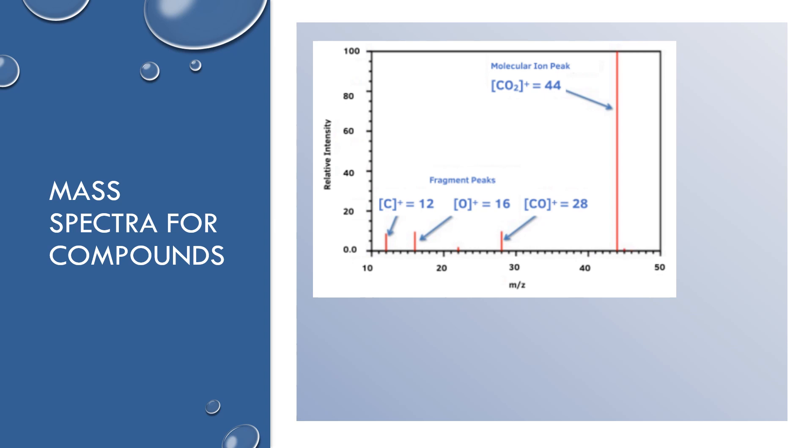Okay, so you can also use mass spectroscopy for compounds. We will delve into this a little bit more in detail when we talk about analytical techniques, but just kind of a primer here. You always have to make it a positive charge ion, so you'll notice that all of these fragments are positively charged.